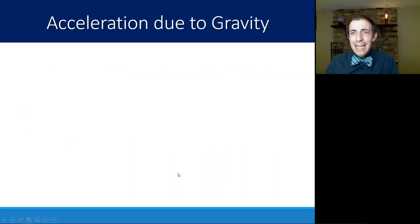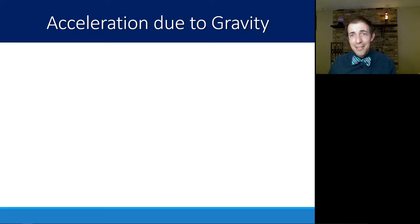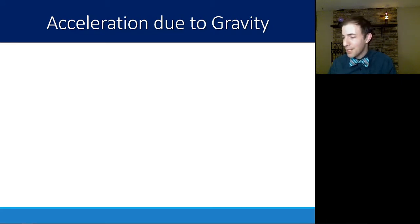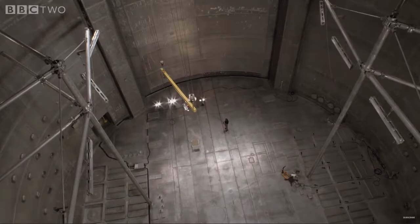So if there's no air resistance, it turns out that everywhere on Earth experiences the same, or relatively the same, acceleration. And not only does location not change it a whole lot, but the object doesn't change it either. So you could have a bowling ball or you could have a feather — if there's no air resistance, they will fall at exactly the same rate.